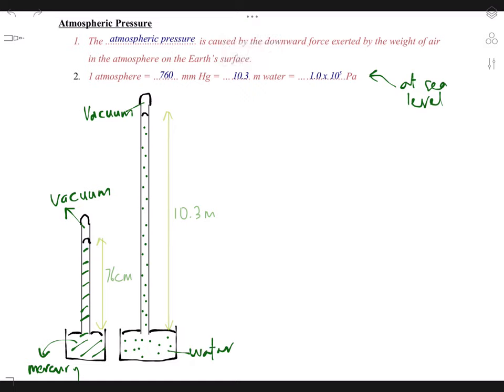Now from previous video we have seen this. When we have mercury here and this is mercury column at sea level, we have around 76 centimeter height of mercury column over here. So let's say this is point A and this is point B in here.